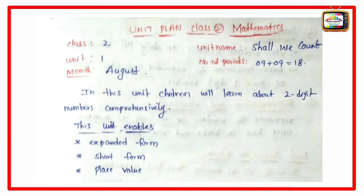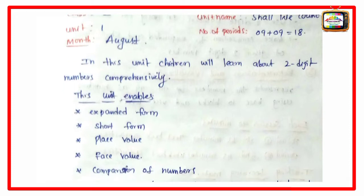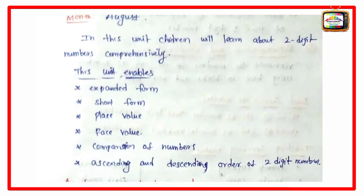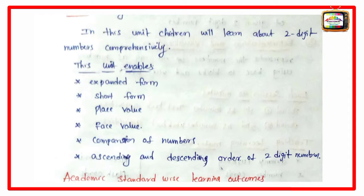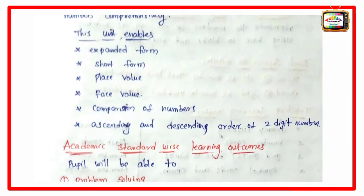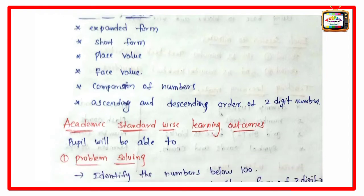In this unit, children will learn about two-digit numbers comprehensively. This unit enables expanded form, short form, place value, face value, comparison of numbers, ascending and descending order of two-digit numbers.